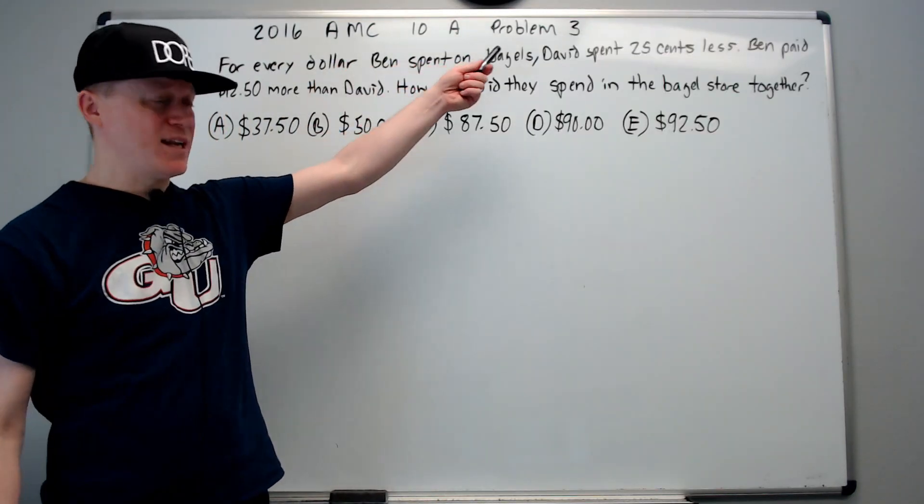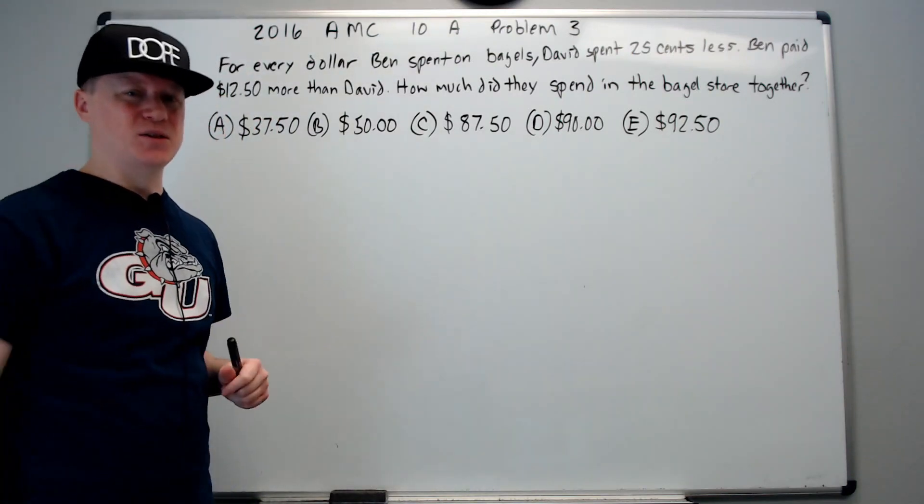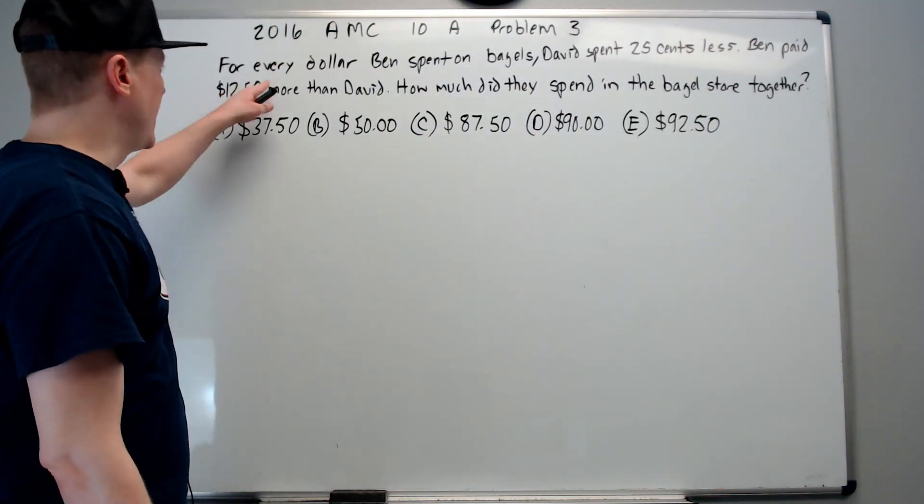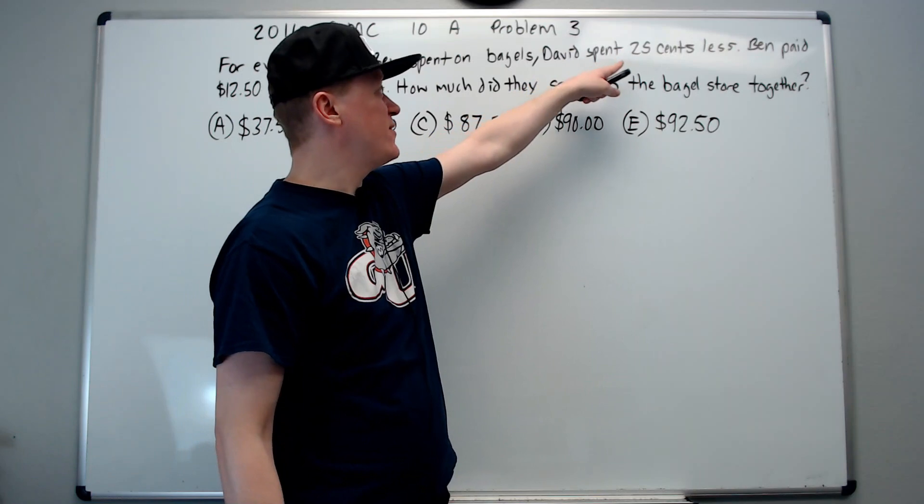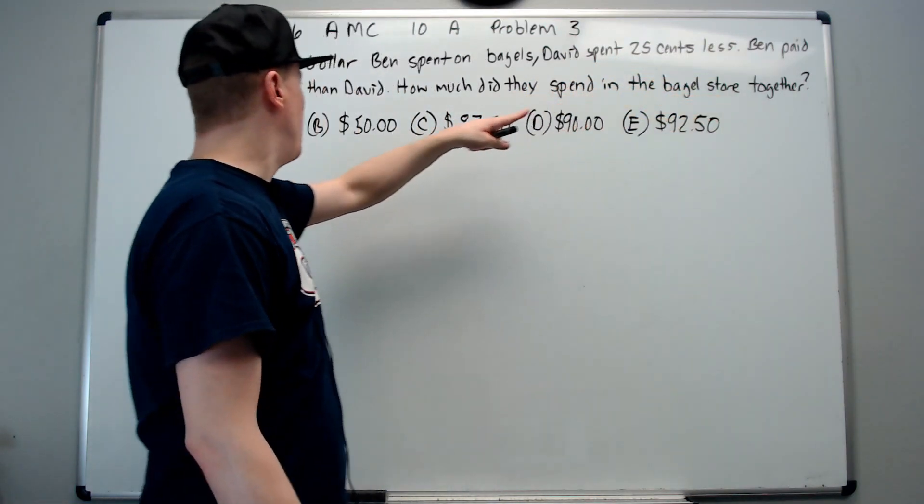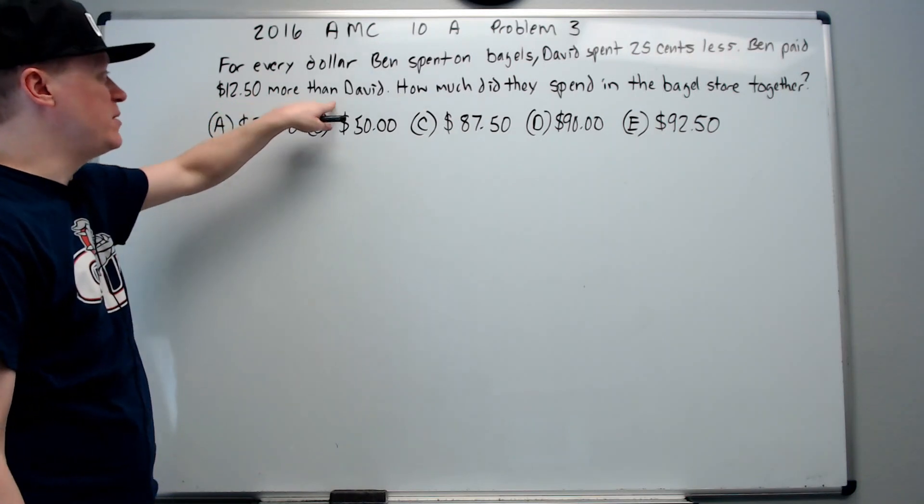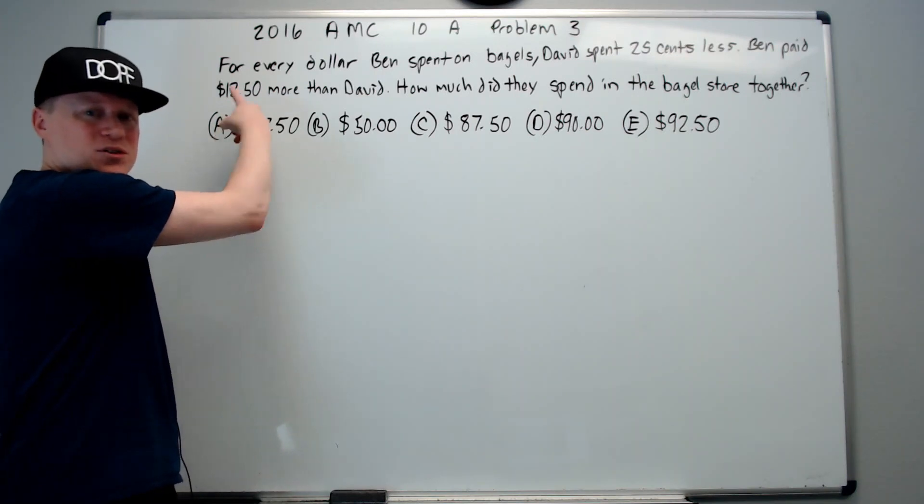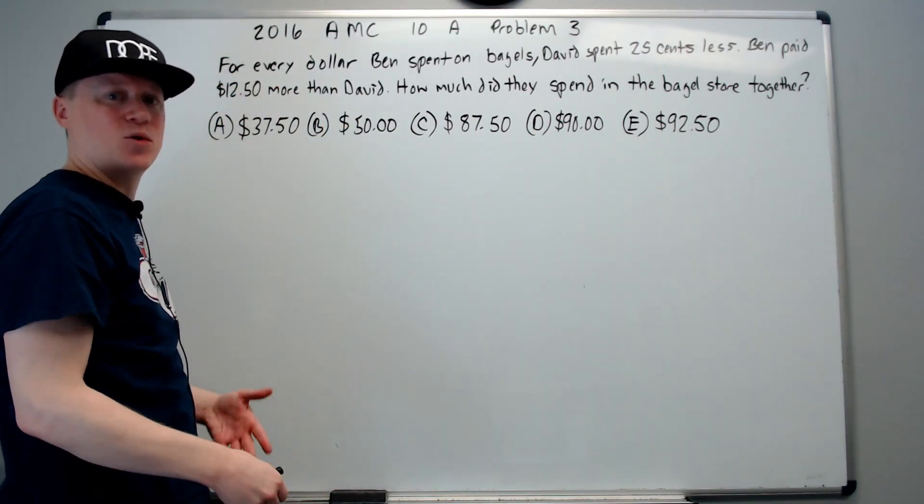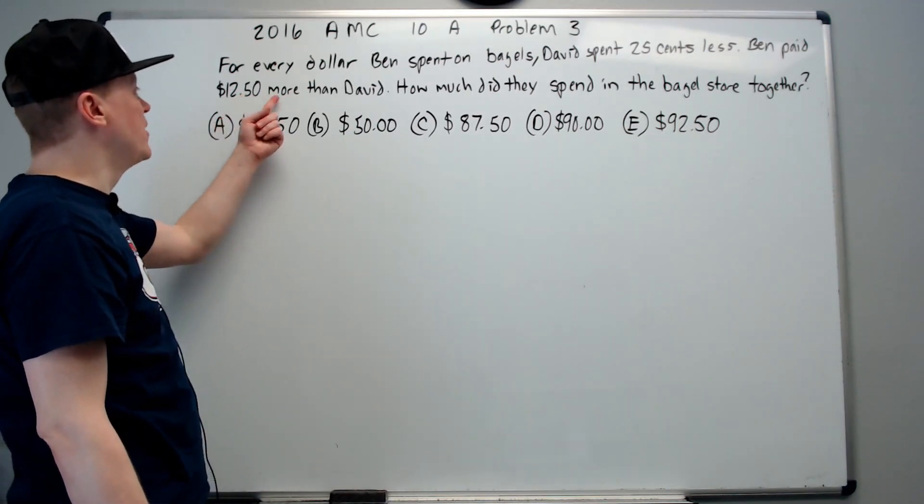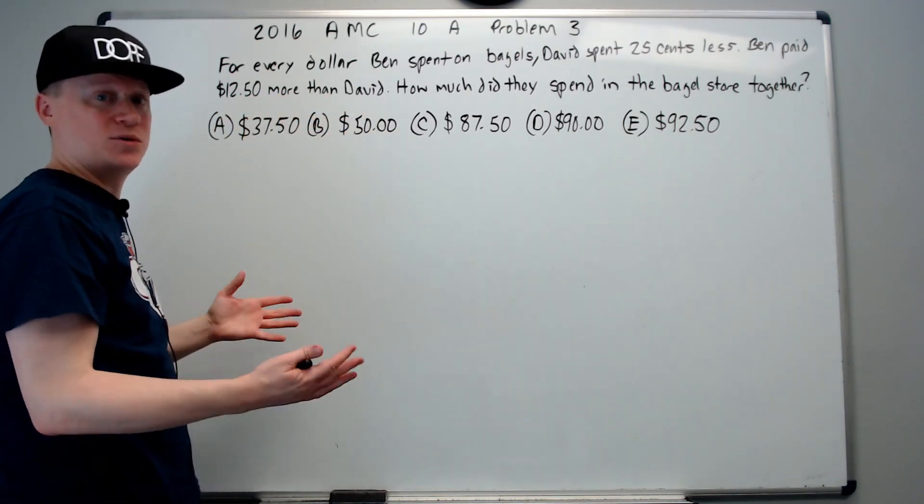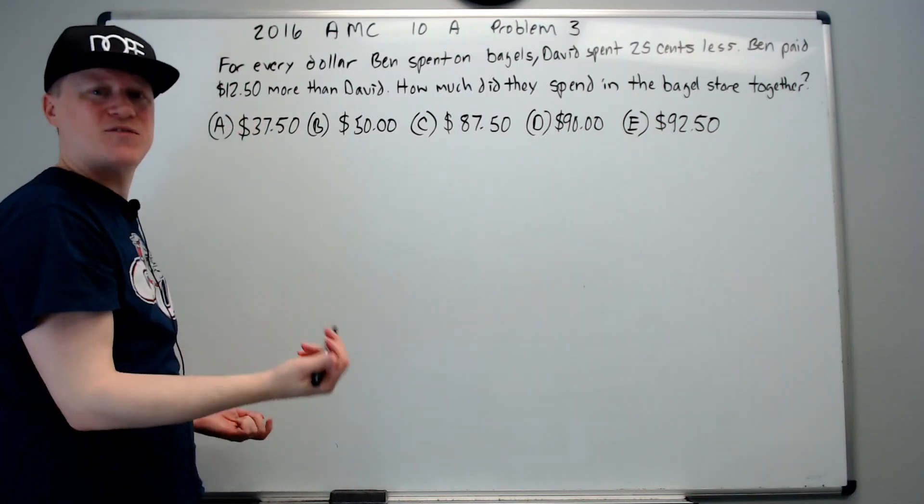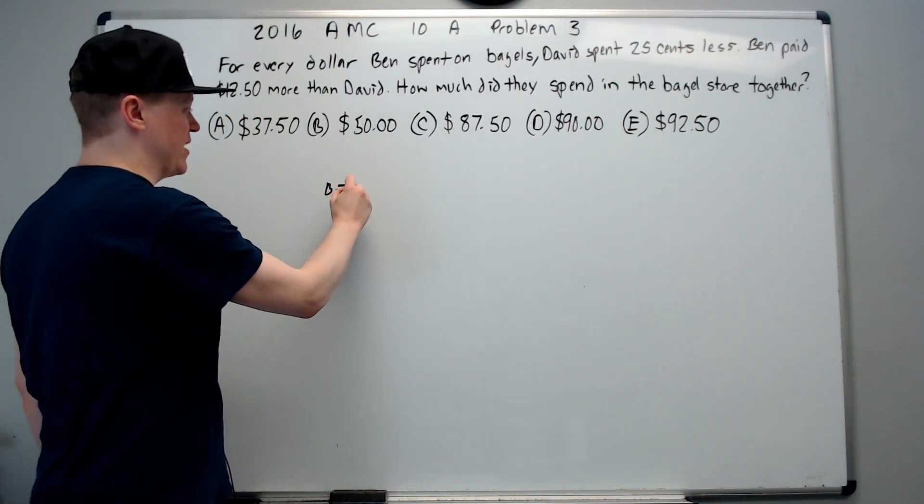Continuing with the 2016 10A problem 3, we're going to do it two different ways. For every dollar Ben spent on bagels, David spent 25 cents less. Ben paid $12.50 more than David. Just instantly think, this is some number of quarters. Figure out how many it is, because every one of those quarters is a dollar that Ben spent. There's four quarters in a dollar, and you've got $12. That's 48 quarters, plus two more quarters is 50 quarters more. That means Ben spent $50.